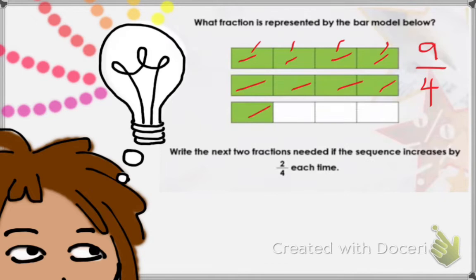If I wanted to turn 9 over 4 into a mixed number, I will count how many wholes there are: whole 1, whole 2. So we have 2 wholes, and 1 left over. So 9 over 4, when we change it into a mixed number, is equal to 2 and 1 fourth.